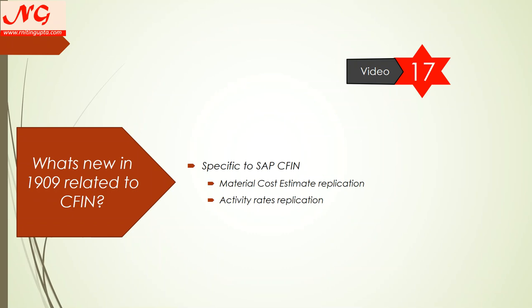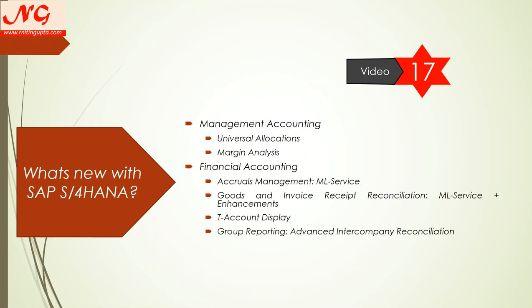On top of Central Finance, in overall S4 HANA — which you can use in CFIN projects as well when you complete replication and move to the transactional scope — you can implement more functionalities. In the CO or management accounting area we have universal allocations and margin analysis. In financial accounting we have accrual management machine learning service, goods and invoice receipt reconciliation machine learning service, T-account display, and group reporting advanced intercompany reconciliation.